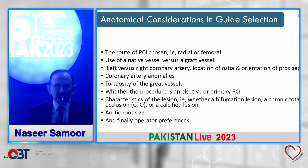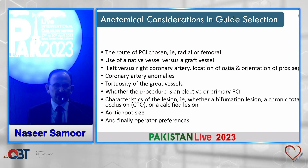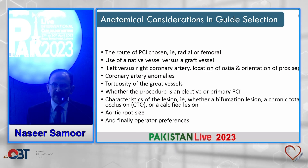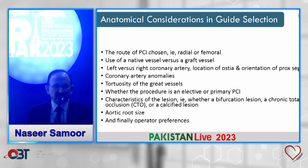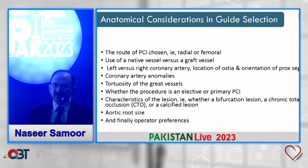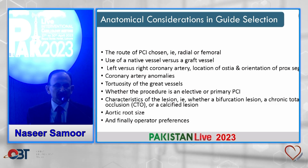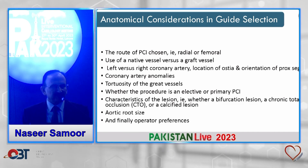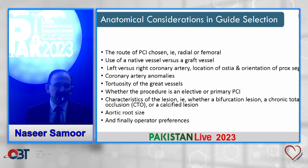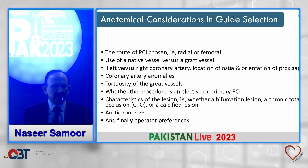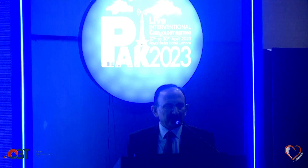There are certain anatomical considerations in guide selection, which depend on the route chosen — for example, radial versus femoral access, native vessels versus grafts, and left versus right coronary artery. Additional factors include the location of the ostium, orientation of the proximal segment, coronary anomalies, tortuosity of the vessels, whether the procedure is elective or emergency, and lesion characteristics such as bifurcation, chronic total occlusion, or calcification.